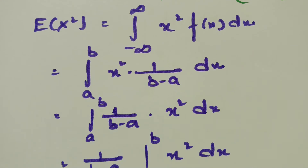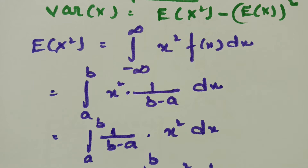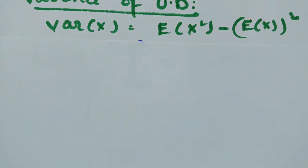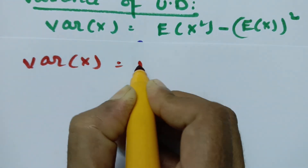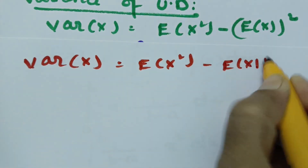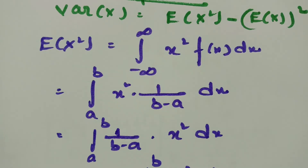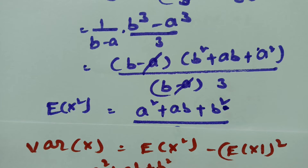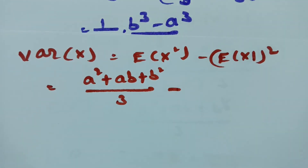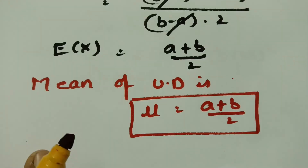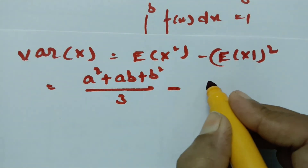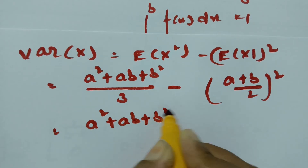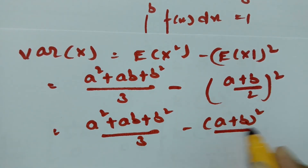Now substituting into the variance formula: Variance(x) equals E(x squared) minus (mean) squared, which is (a squared + ab + b squared)/3 minus [(a + b)/2] squared. This equals (a squared + ab + b squared)/3 minus (a + b) squared over 4.